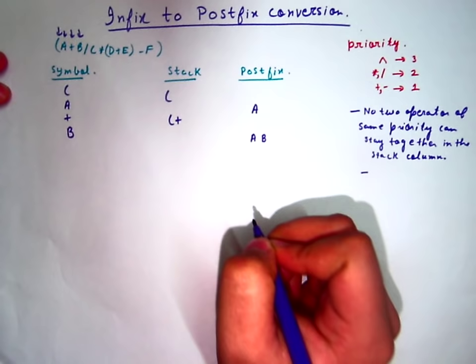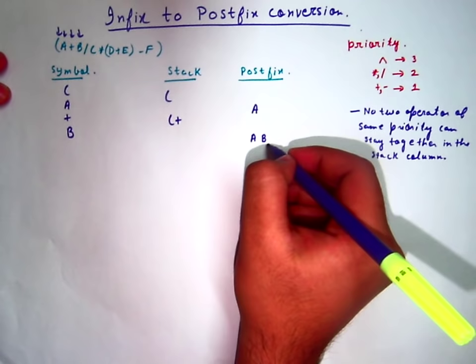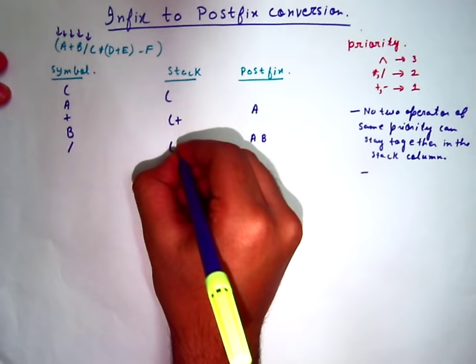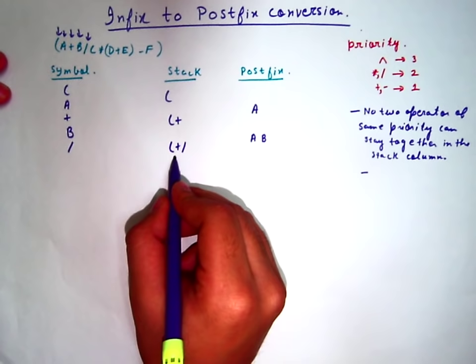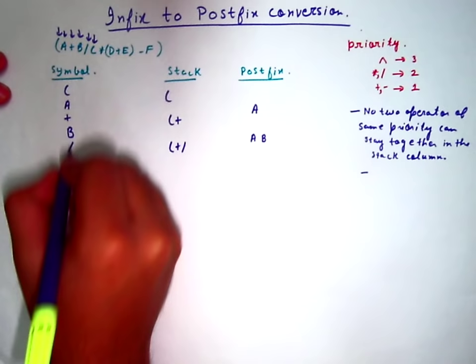See that A was also added to the postfix column. Then comes the division operator. The division operator has higher priority than the plus operator, so they can stay together here. Next comes C.